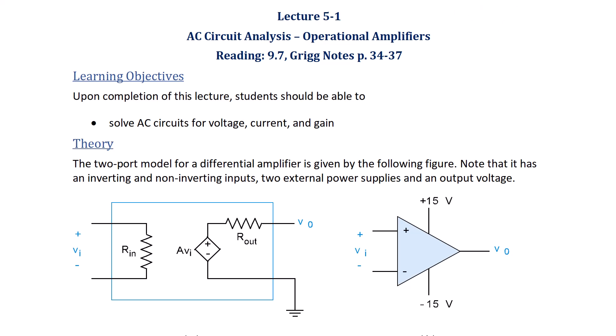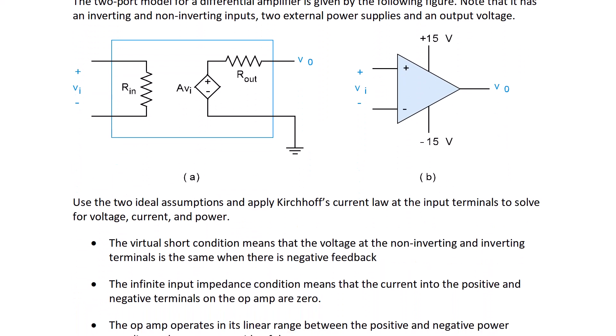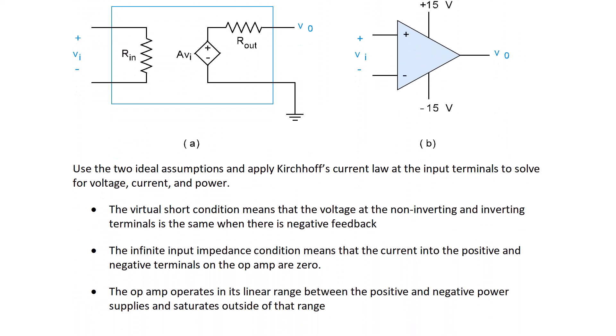When we have negative feedback, we use the two ideal assumptions and apply Kirchhoff's current law at the input terminals to solve for voltage, current, and power. The virtual short condition means that voltage at the non-inverting and inverting terminals is the same, and the infinite input impedance condition means that the current into the positive and negative terminals of the op-amp are zero. The op-amp operates in its linear region between the positive and negative power supplies and saturates at the output outside of that range.